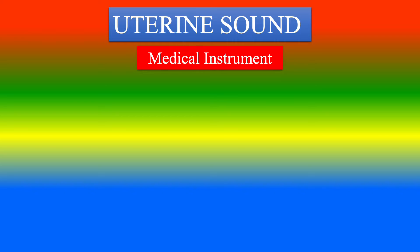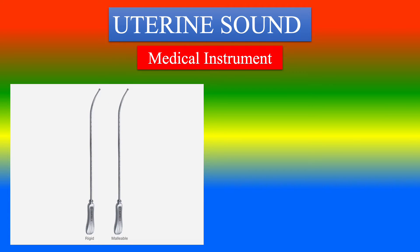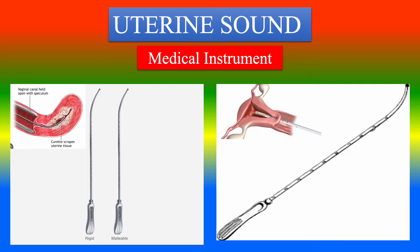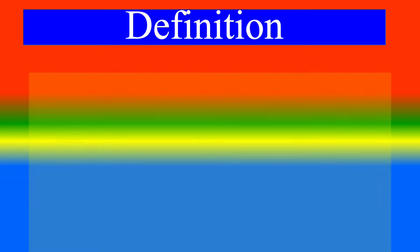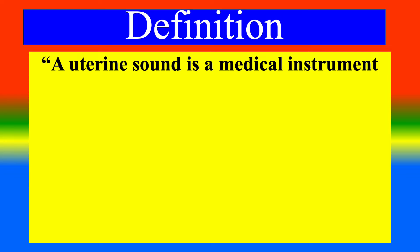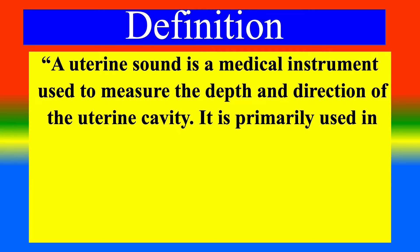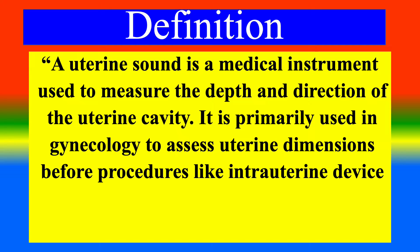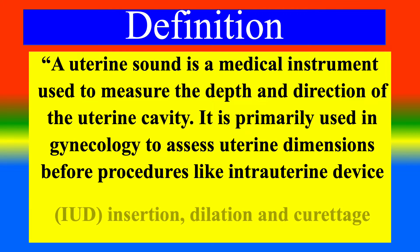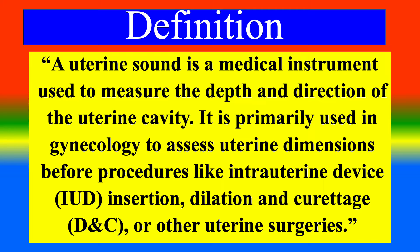A uterine sound is a medical instrument used to measure the depth and direction of the uterine cavity. It is primarily used in gynecology to assess uterine dimensions before procedures like intrauterine device insertion, dilatation and curettage, or other uterine surgeries.